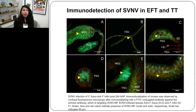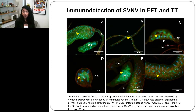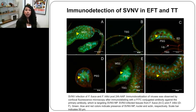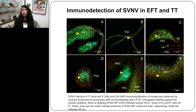Looking at SVNV immunodetection after 24 hours of acquisition access period in tobacco thrips (Frankliniella fusca) and eastern flower thrips: virus infection is clearly visible in tobacco thrips in the midgut, tubular salivary glands, and principal salivary glands. The same is true for eastern flower thrips — virus is very clearly seen in the principal salivary glands. Detection of virus in the principal salivary glands is crucial because if it's present there, it will come out into the lumen and be transmitted through saliva. Presence in other structures may not correlate with virus transmission as strongly as presence in the principal salivary glands does.